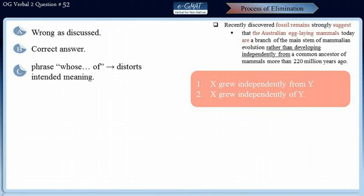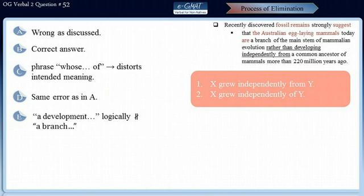Choice D repeats the same error as choice A — again we have a verb-ing phrase and a noun phrase that are not grammatically parallel to each other. In choice E we again have a parallelism error. Although 'a development' is a noun phrase, it distorts the logical parallelism in the sentence. This choice implies that egg-laying mammals 'are rather a development,' which is nonsensical because mammals cannot be a development.